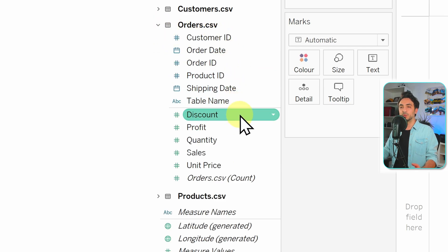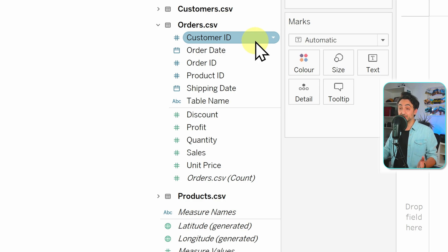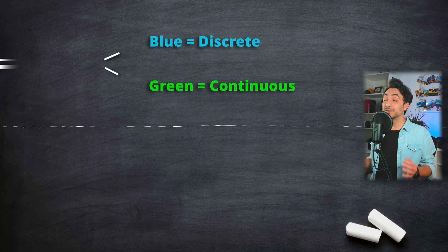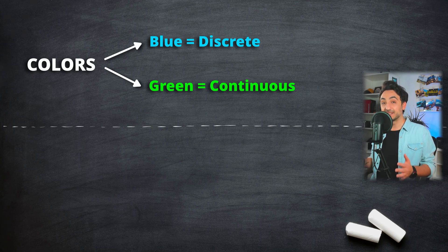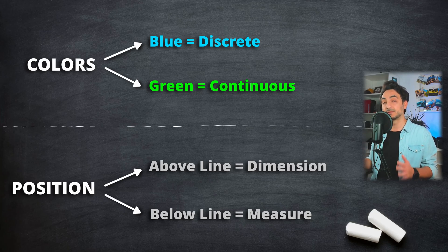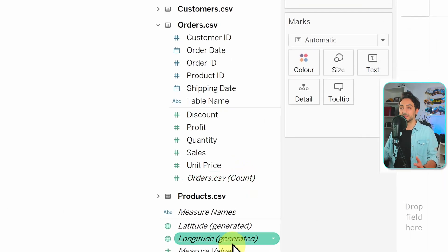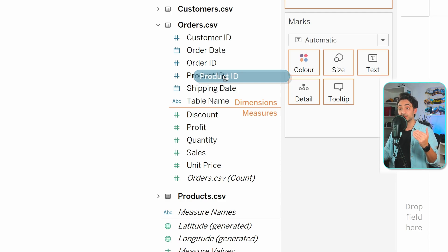You might think: if a field is blue it's a dimension, and if green it's a measure. This is exactly where most Tableau developers get confused — mixing up dimensions/measures with discrete/continuous. The color actually indicates whether a field is discrete or continuous, which we'll cover in the next tutorial. So the color does NOT indicate dimension or measure — what matters is the position of the field: above the line means dimension, below means measure. Tableau even highlights the line in orange when you drag a field.